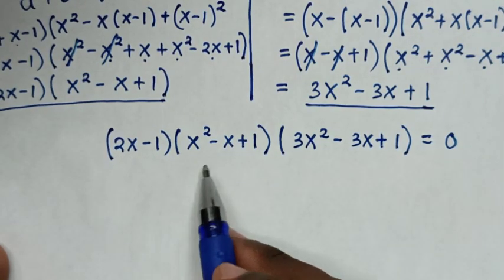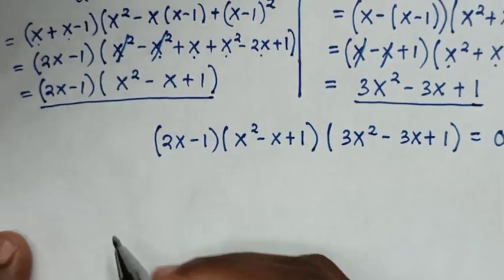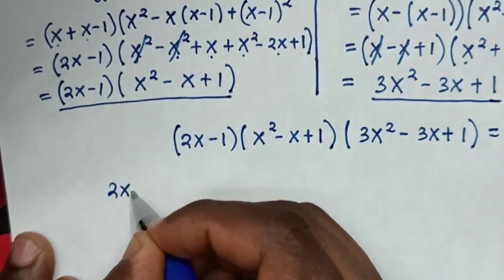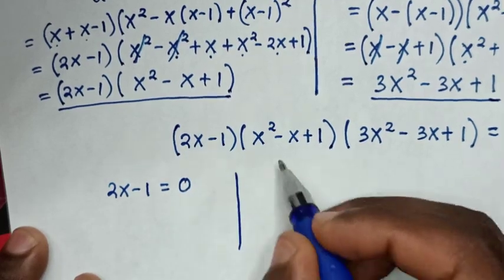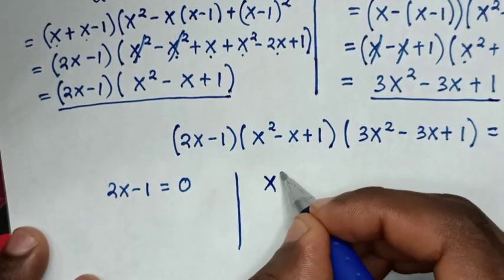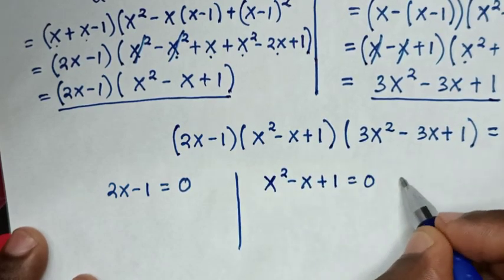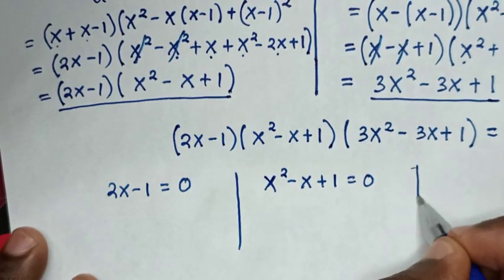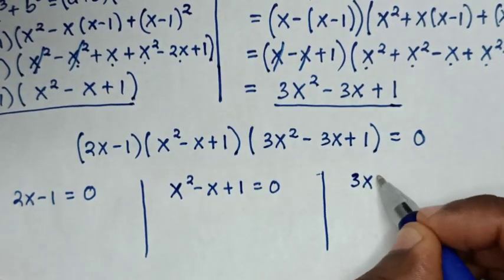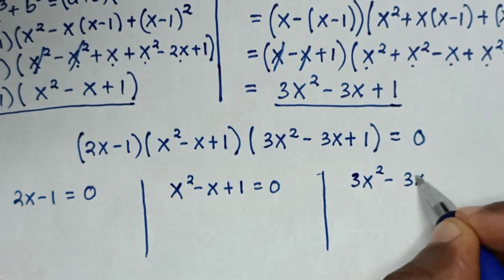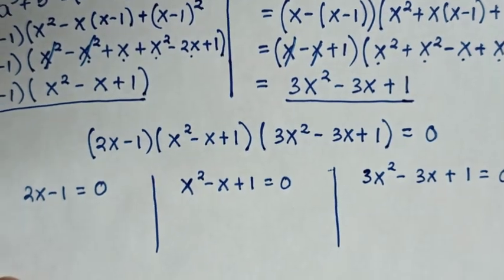From this equation, we have three solutions. The first solution is 2x minus 1 equals 0. The second solution is x² minus x plus 1 equals 0. And the third solution is 3x² minus 3x plus 1 equals 0.